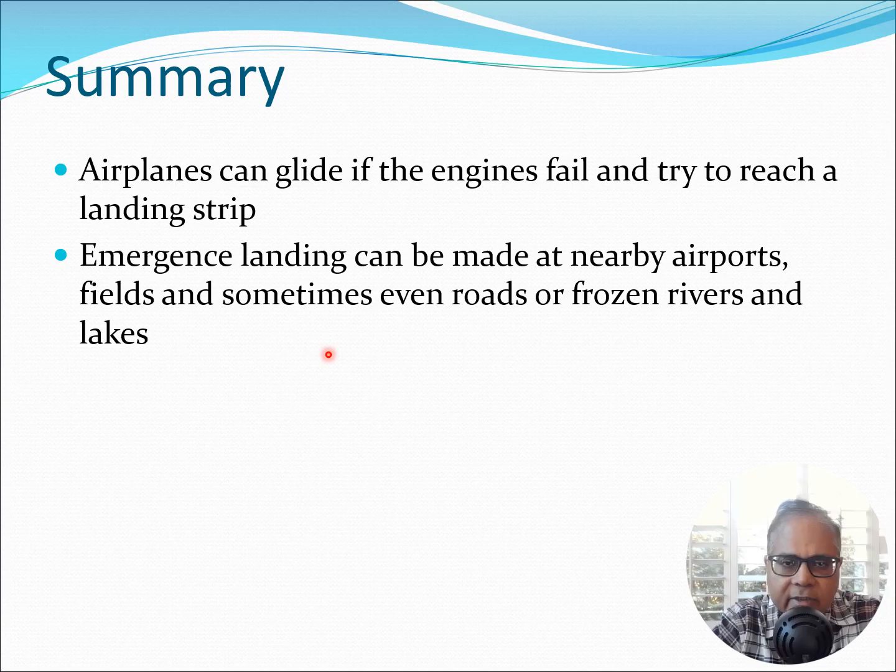So let's make certain points about this glider type of situation. Airplanes can glide if the engines fail and they try to reach a landing strip. Emergency landing can be made at nearby airports and also they can be made in fields and sometimes even roads and frozen rivers and lakes. This has been attempted in various countries around the world depending on the location you are at. Sometimes people even land these aircraft in rivers and the airplane may float for some time.